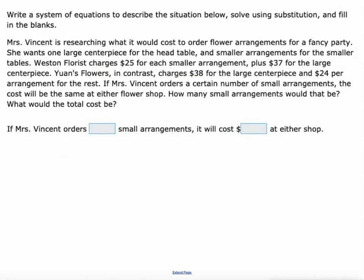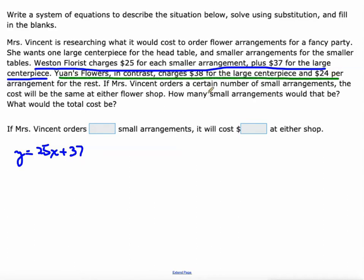New situation here. Mrs. Vincent is researching what it would cost to order flower arrangements for a fancy party. She wants one large centerpiece for the head table and smaller arrangements for the smaller tables. Weston Florist charges $25 for each smaller arrangement plus $37 for the large centerpiece. So an equation to represent that: the cost would be $25 for each small centerpiece plus the $37 for the one large that we're going to buy. Juan's Flowers, in contrast, charges $38 for the large centerpiece and $24 per arrangement for the rest. So Juan's cost is $24 per small arrangement and $38 for the one large arrangement.